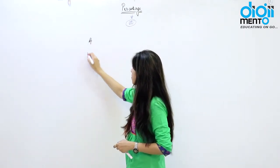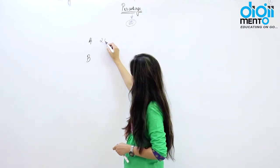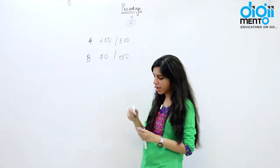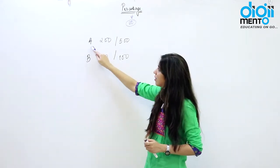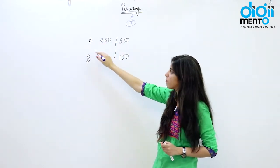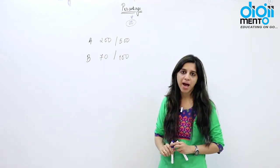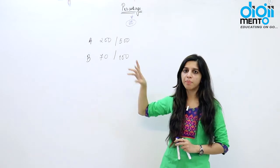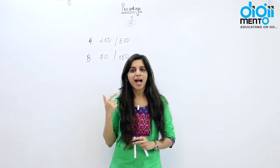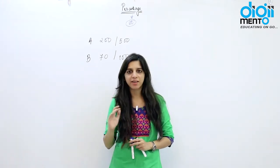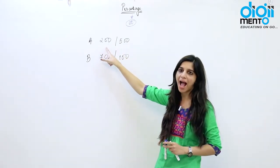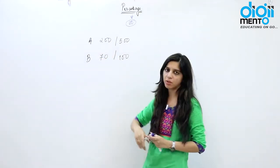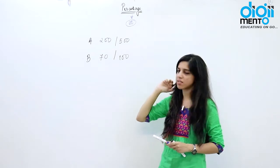For example, suppose there are two students A and B. Student A scored 200 marks out of 500, and student B scored 70 marks out of 100. If I compare their marks directly, A clearly scored more than B. But this is not a valid comparison because their total marks are different. So it is not valid to compare their marks directly — we need a common reference point.